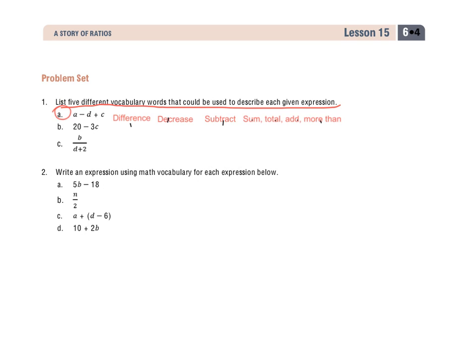So I overachieved on that one when it says five different ones. When you look at B, you have two different operations: the multiplication piece and the subtraction. And then C, you have division and addition. So you'll come up with five different vocabulary words for it.